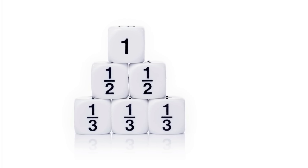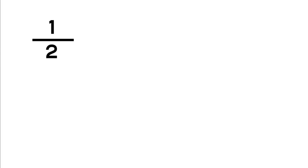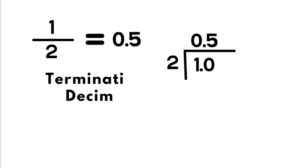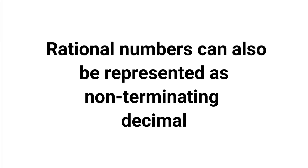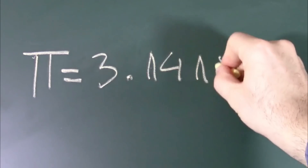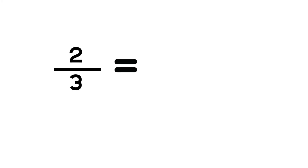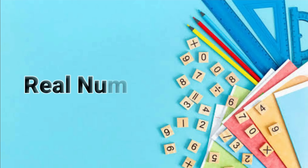Back to rational numbers. Rational numbers can be represented as terminating decimals. For example, one half can be represented as the decimal 0.5. Rational numbers can also be represented as non-terminating decimals where the decimal goes on forever. For example, 2 thirds has repeating digits, as shown here. This moves our discussion back to the real numbers.